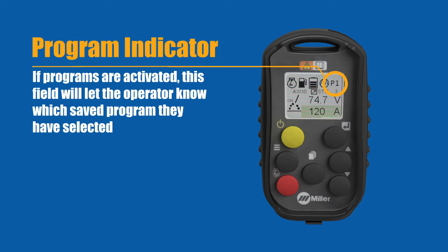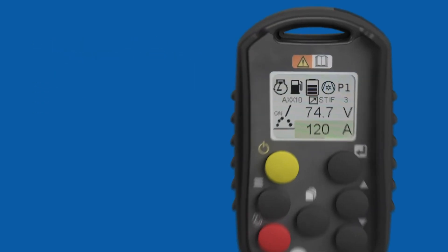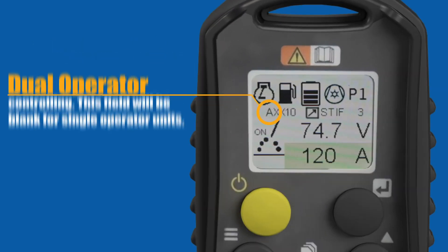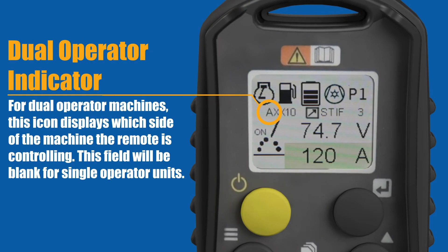Program indicators: if programs are activated, this field will let the operator know which saved program they have selected. Dual machine indicator: for dual operator machines, this icon displays which side of the machine the remote is controlling. This field will be blank for single operator units.